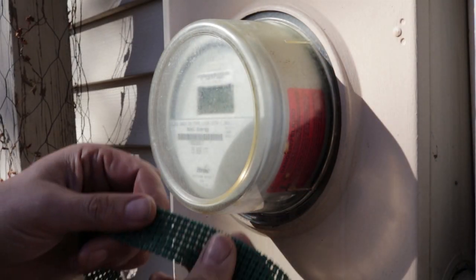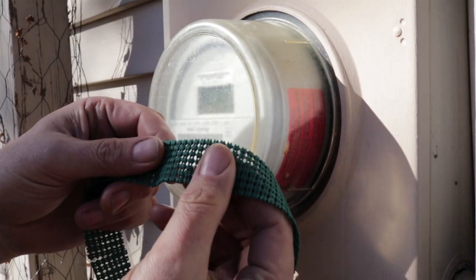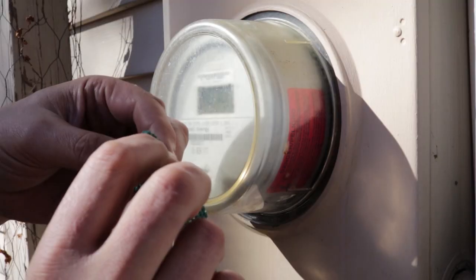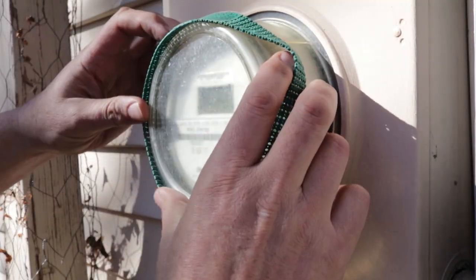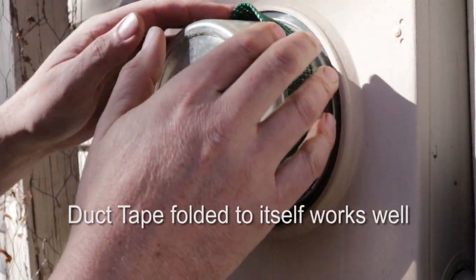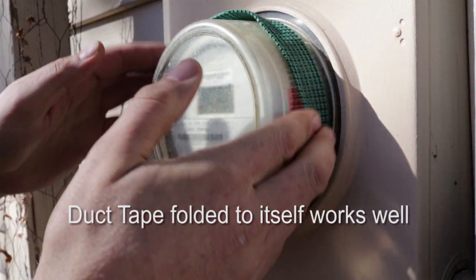It's important not to mark or damage the meter in any way, so to prevent the mesh from slipping off, I made a gasket from a strip of rubbery material and taped it together. This will help the clamp grip the surface of the housing.